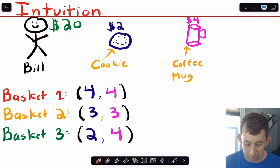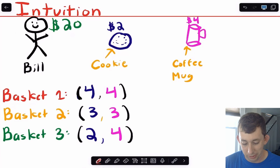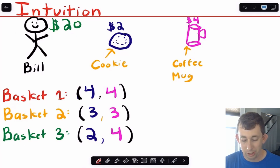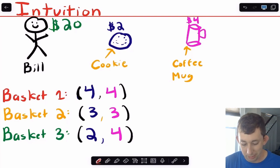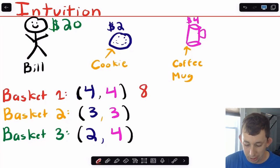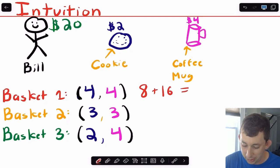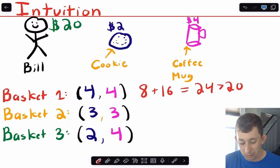Bill's trying to figure out what bundles of cookies and coffee mugs he can afford. I've written down three baskets. Basket one has four cookies and four coffee mugs. I'm not concerned with what Bill prefers, just what he can afford. If he buys four cookies at $2 each, he's spending $8 on cookies. Four coffee mugs at $4 each is $16, for a total of $24, which is greater than $20. So Bill can't afford basket one.